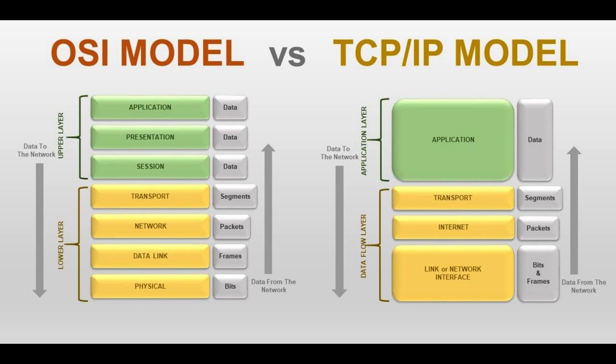When compared to the OSI reference model, the TCP/IP model combines the application, presentation, and session layers into a single top layer called the application layer, and combines the data link and physical layers into a bottom layer called the network interface layer.